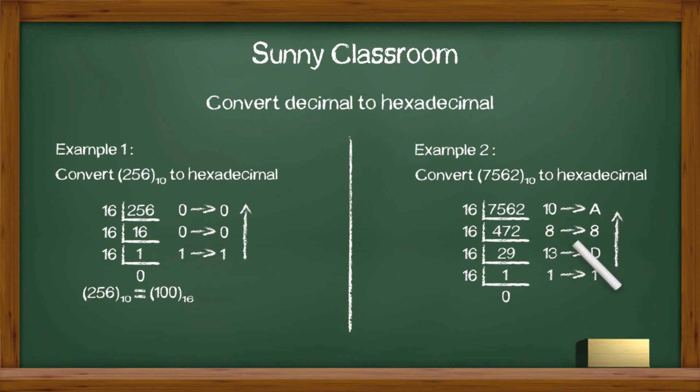Last step. Write down the remainders from the last to first. Thus, the decimal number 7562 is 1d8a.